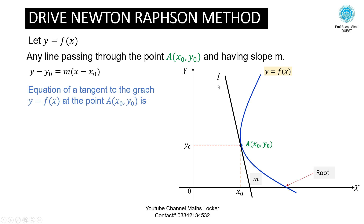This line L is a tangent because it touches the curve at point A. The equation of the curve is y = f(x). Putting x₀ into the curve equation: at point x₀, the height is y₀, so y₀ = f(x₀).